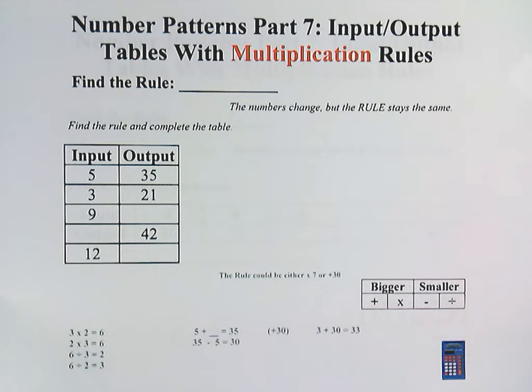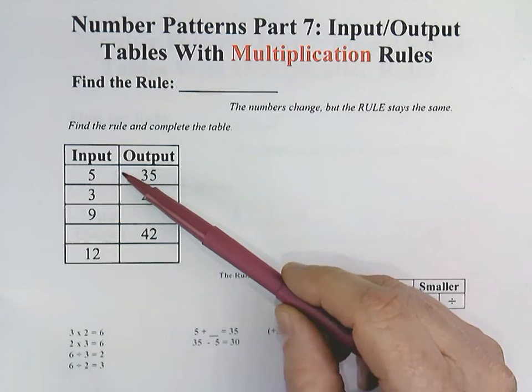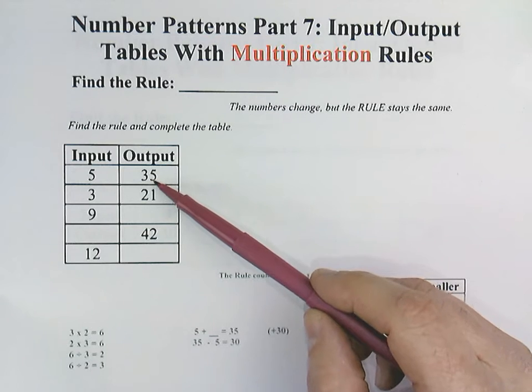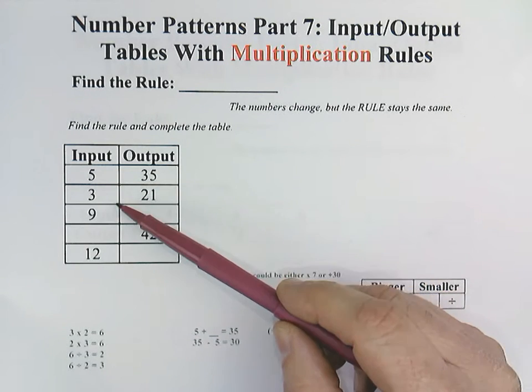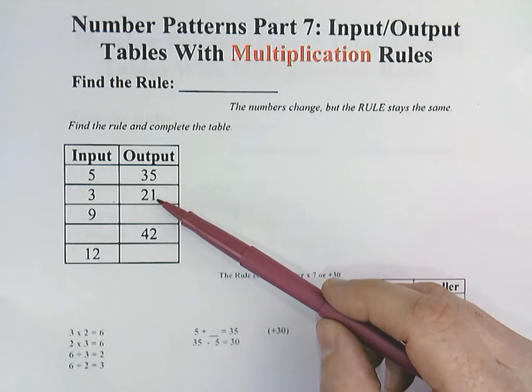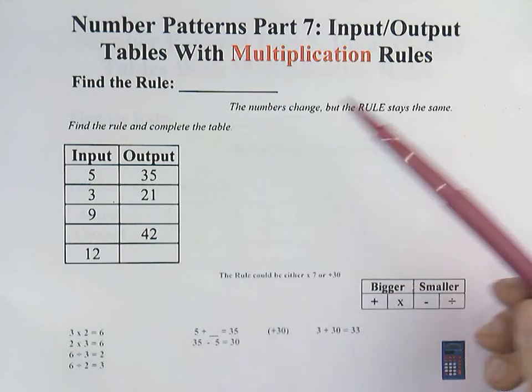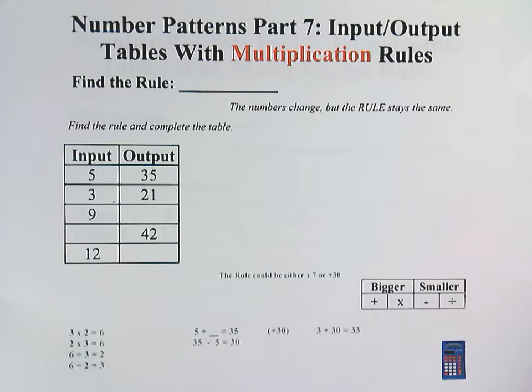An input-output table is a table of numbers that has an input column and an output column, and the input and the output work in a set. For example, 5 and 35 work together. 3 and 21 work together in a set. Usually they run from top to bottom, but it could also sometimes be left to right.